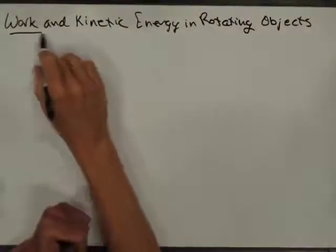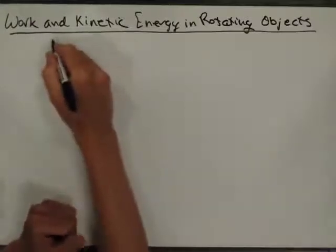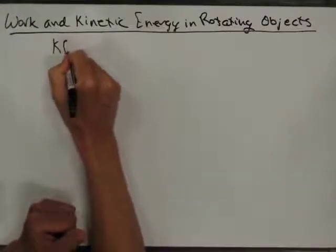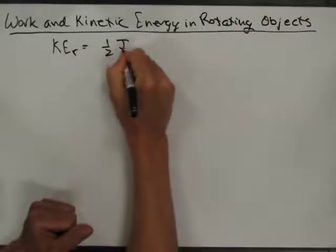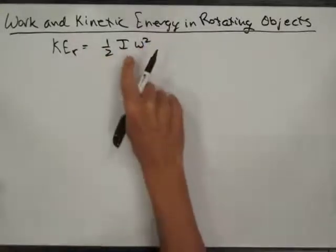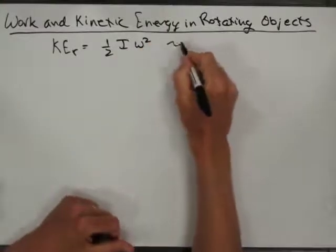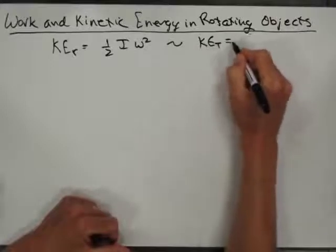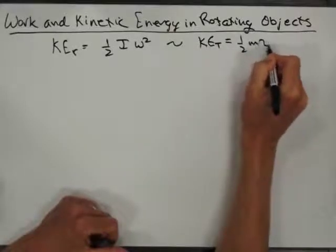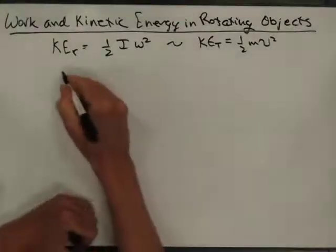This section is on work and kinetic energy in rotating objects. We already have the formula for the kinetic energy for rotating objects, which is ½Iω². We identified the rotational inertia for various objects. This is analogous to the kinetic energy for translating objects, which is ½mv². I'll show you another way to come up with this because it'll be useful in the context of work.